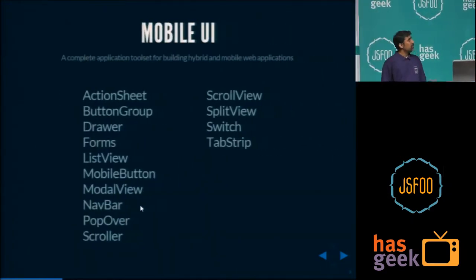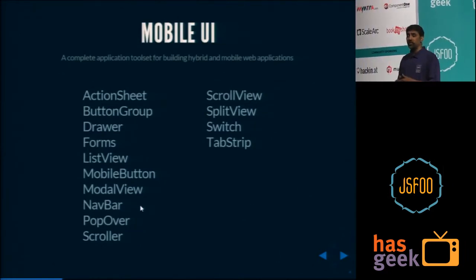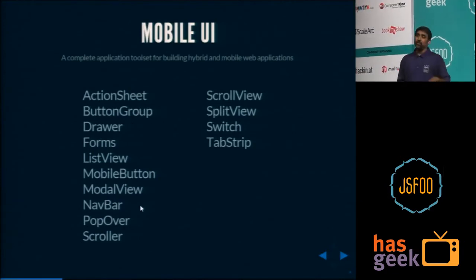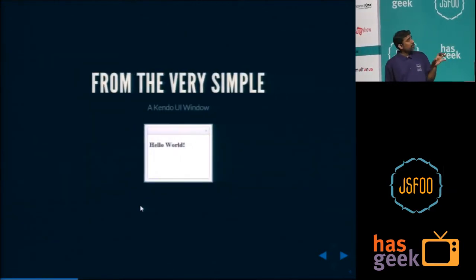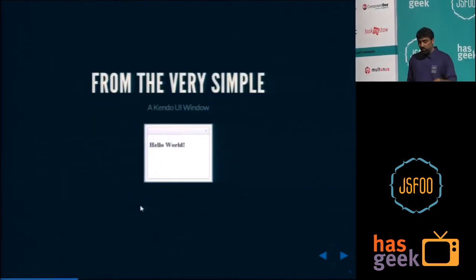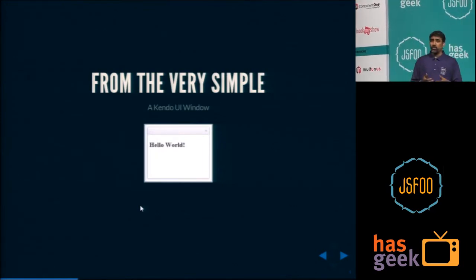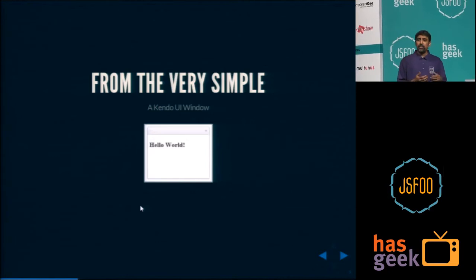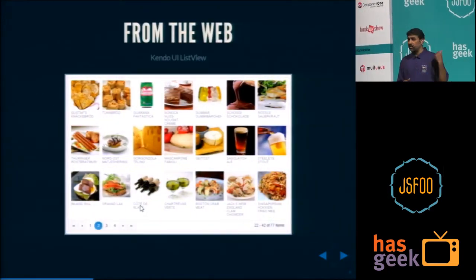This is a complete mobile framework starting from tab strips to action sheets — you name it. Everything you need to build a hybrid mobile application is available as part of this framework. So what can you build? From the very simple Kendo UI window — which is basically a pop-up — to very complex things.